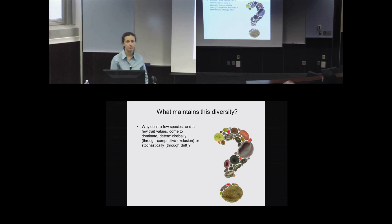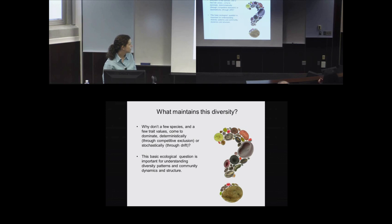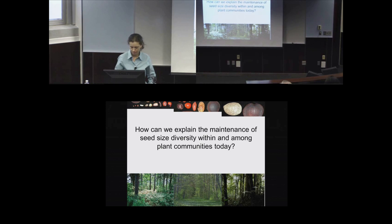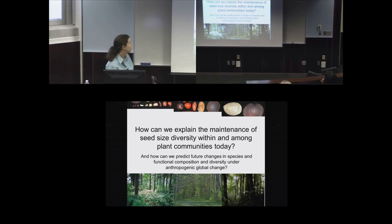So this brings up the question: what maintains this diversity? Why don't a few species or trait values come to dominate deterministically through competitive exclusion or stochastically through drift? This basic ecological question is important for understanding diversity patterns in community dynamics and structure, and it's also of applied importance for conserving diversity going forward in the face of global change.